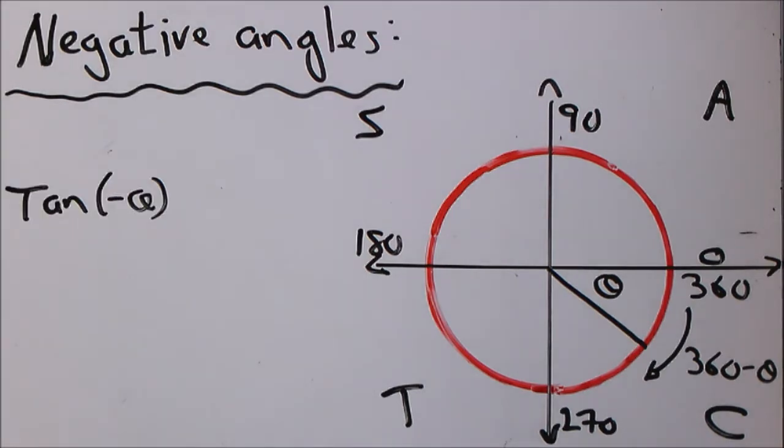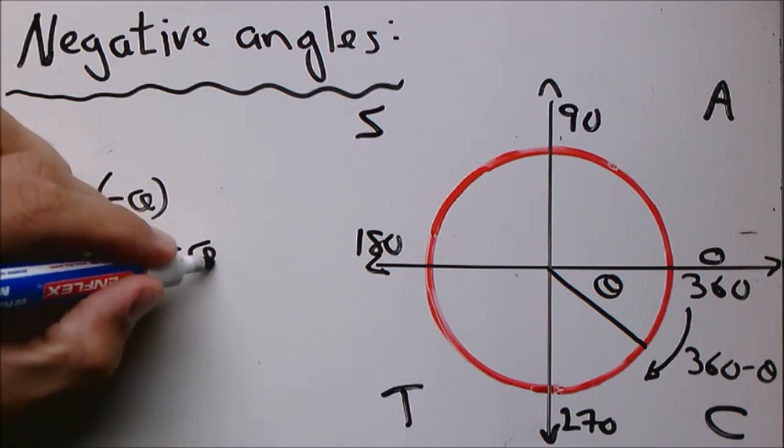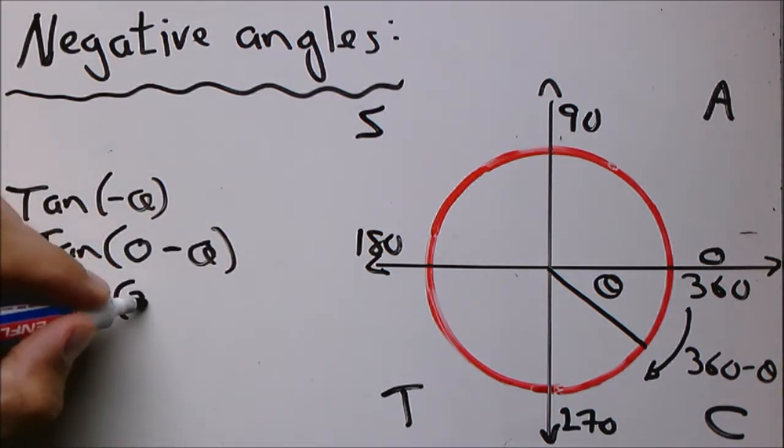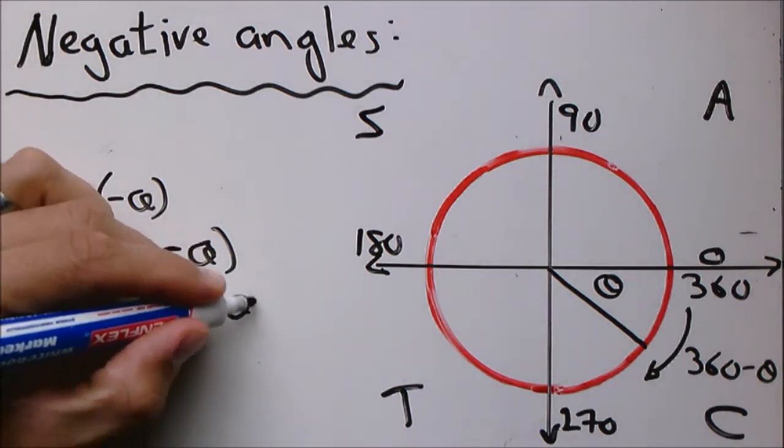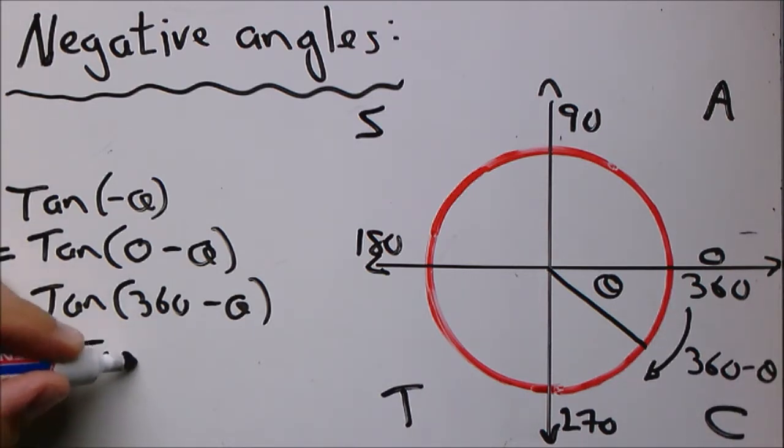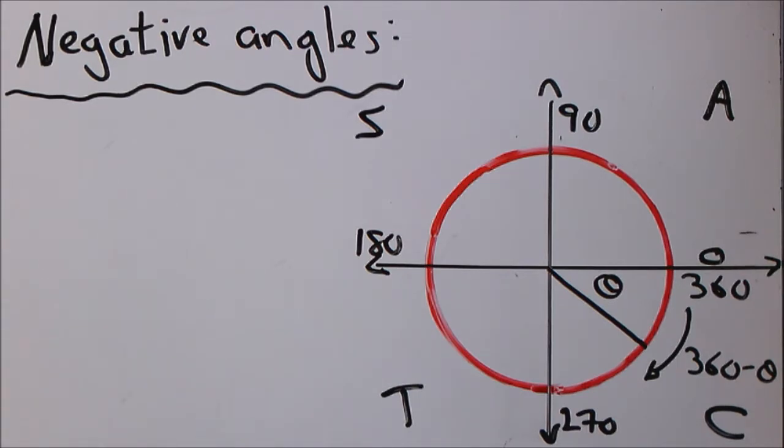Now for tan negative theta. It's the same as zero minus theta, which is the same as 360 minus theta. And we know by looking at our CAST diagram that tan is negative there. So this will be negative tan theta.